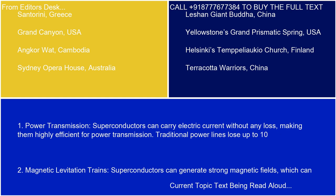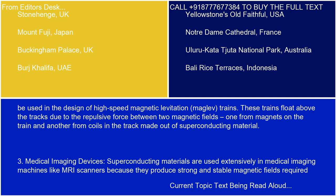Two, magnetic levitation trains. Superconductors can generate strong magnetic fields, which can be used in the design of high-speed magnetic levitation, or maglev, trains. These trains float above the tracks due to the repulsive force between two magnetic fields — one from magnets on the train and another from coils in the track made out of superconducting material.